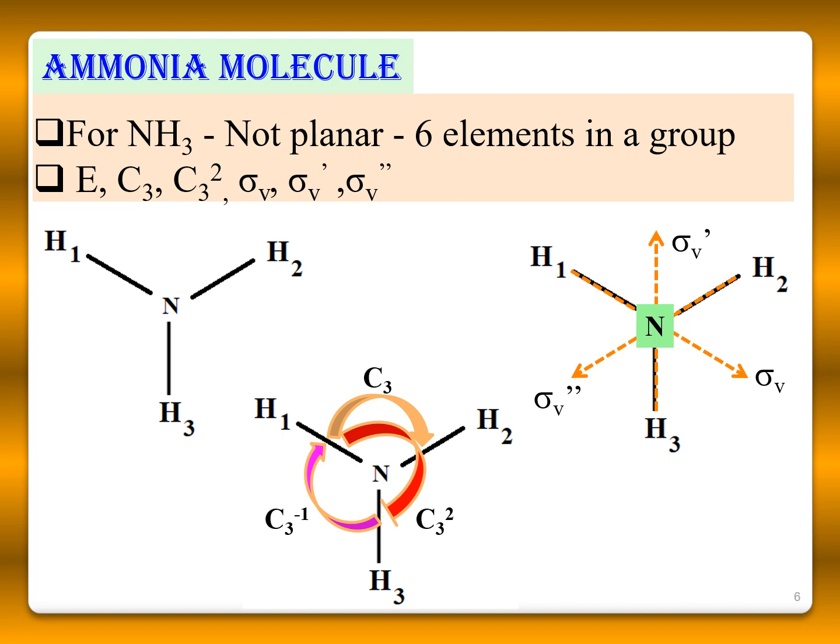Now, if you take an ammonia molecule, it is NH3. It is not planar and it has six elements in a group: the identity element E, C3 rotation (120 degree rotation), C3² (240 degree rotation), σv along N and H1, σv prime along N and H3, and σv double prime along N and H2. So, we have six elements in the group: E, C3, C3², σv, σv prime, and σv double prime.